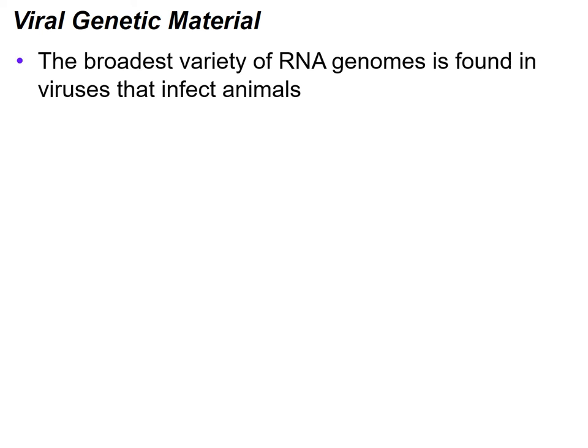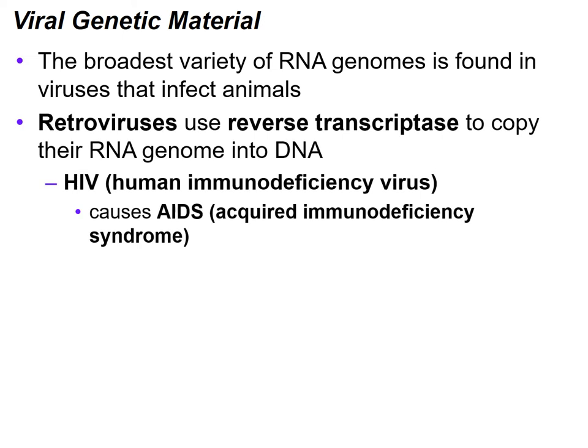Now let's talk about the viral genetic material. The broadest variety of RNA genomes is found in viruses that infect animals. Animals can have retroviruses. Retroviruses use reverse transcriptase to copy their RNA genome into DNA. One example is the HIV virus — human immunodeficiency virus — which causes AIDS, acquired immunodeficiency syndrome. This is the result of being infected with HIV, once HIV becomes more activated and causes disease.